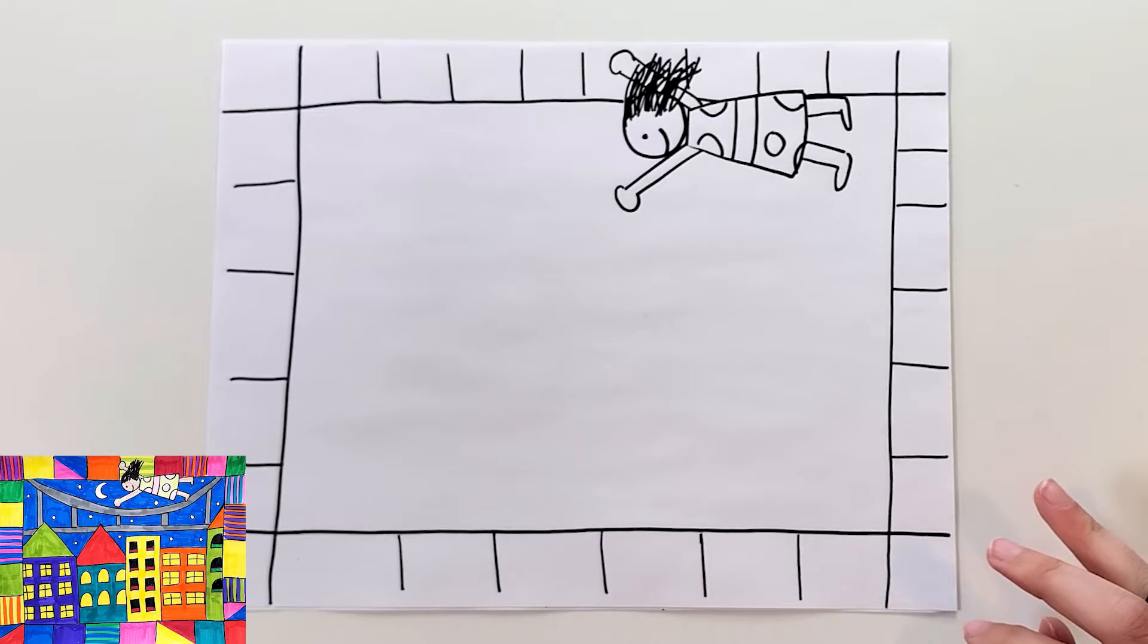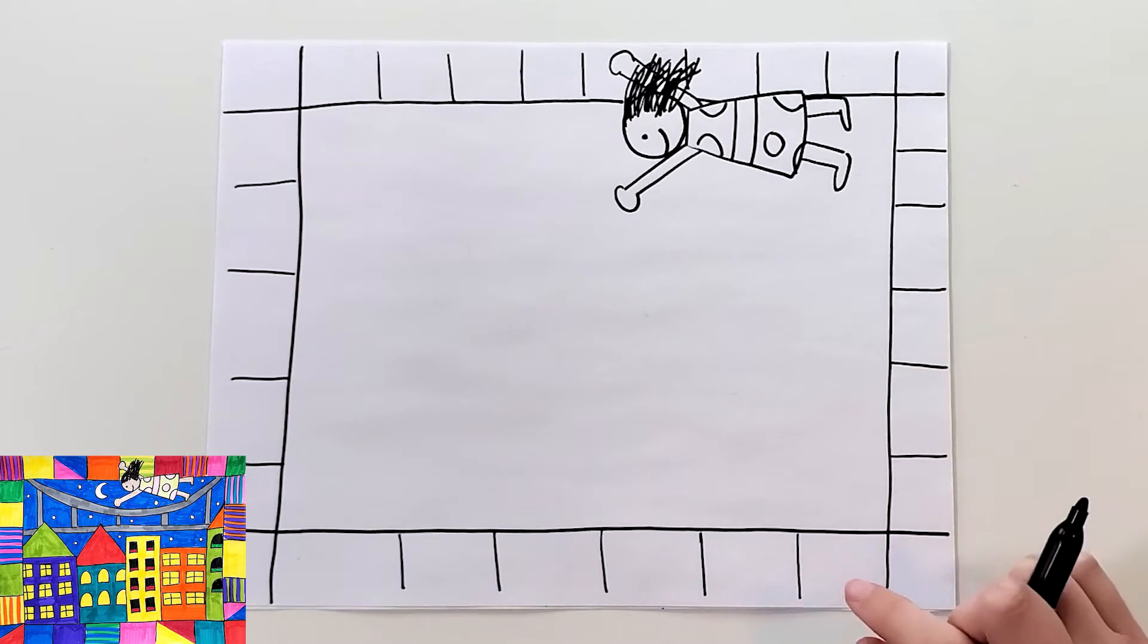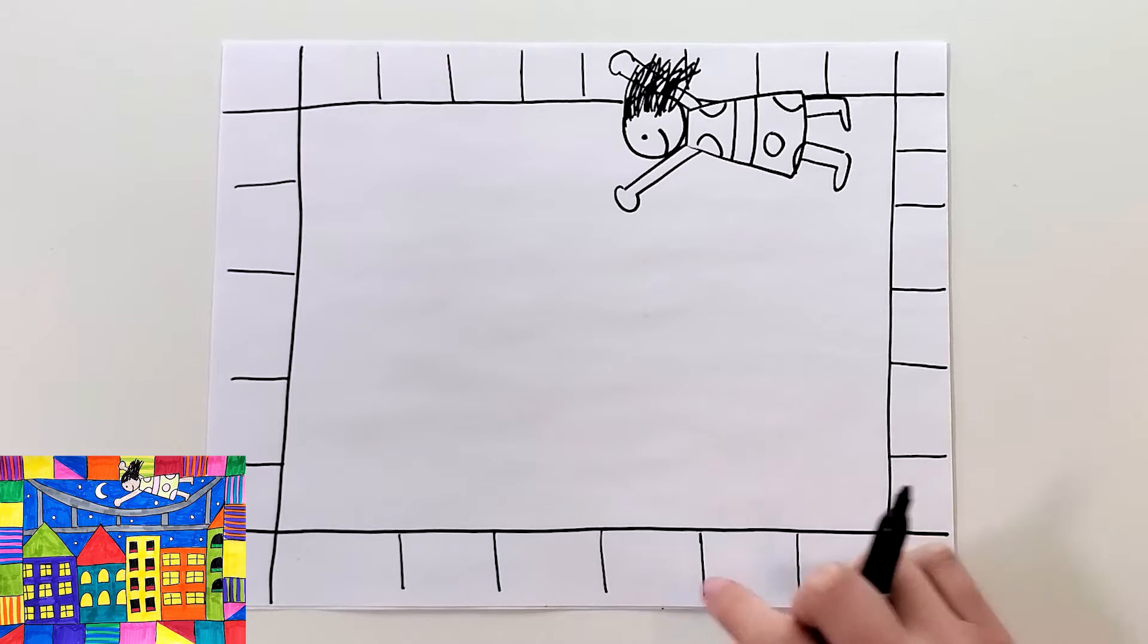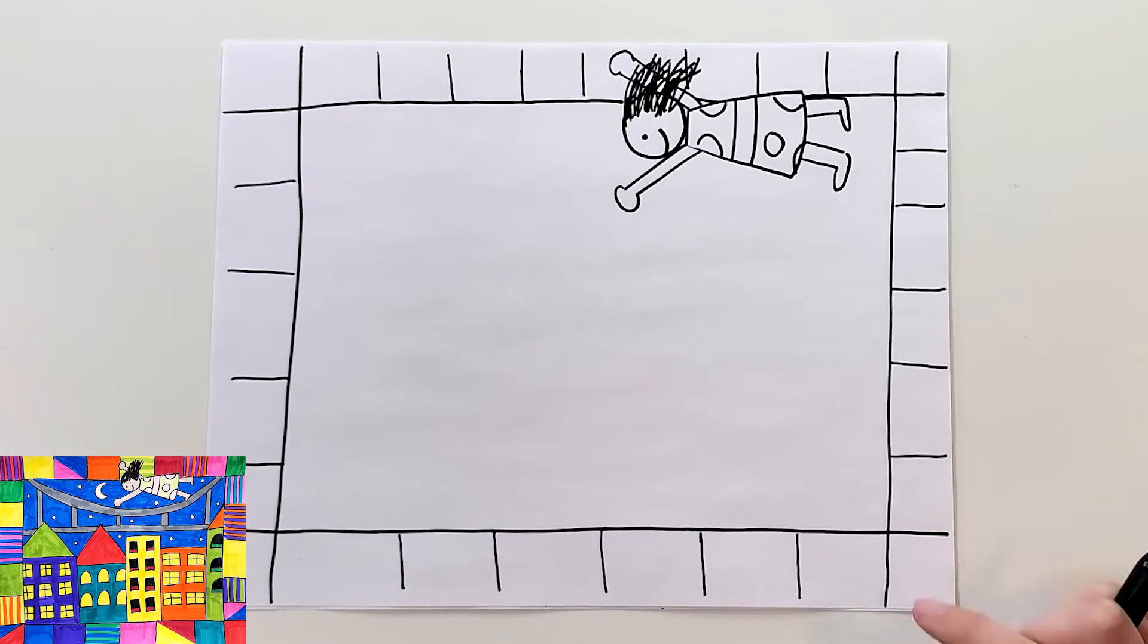Now at this point I would recommend that you go in and you add your colors and your designs to the border because if you wait until the end you might not want to do it then. So I would go in and add different patterns, designs, colors. You could even add some shapes on the border. If you want to pause the video to do that, that's a good idea. Otherwise I'm going to continue on and show you the rest of the drawing.